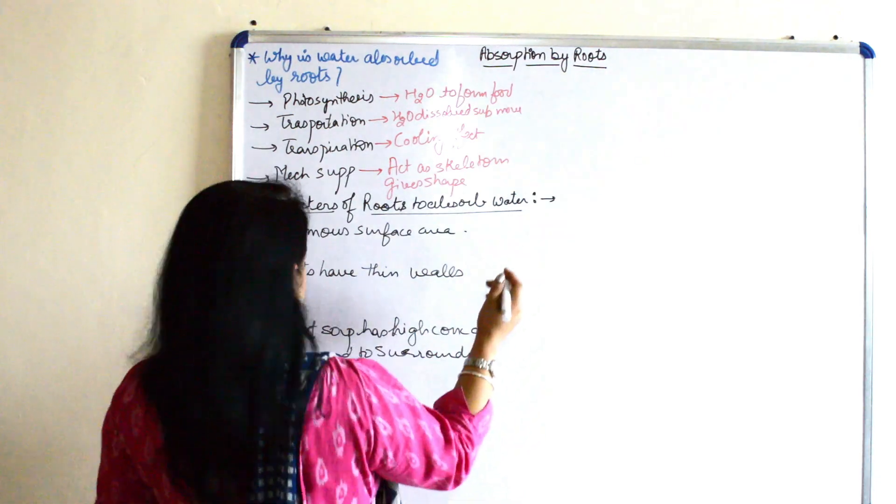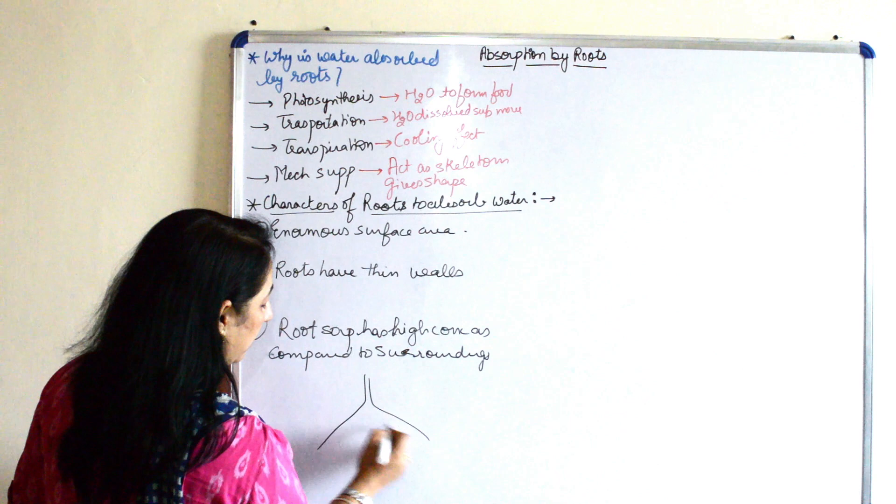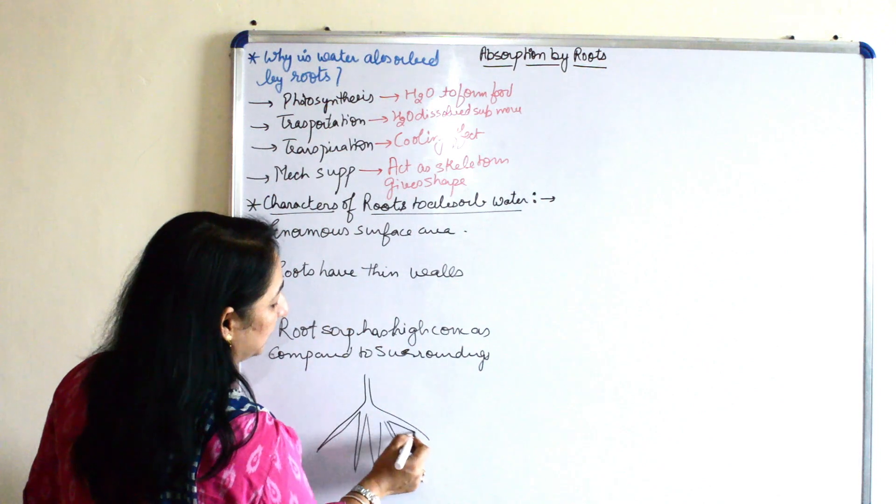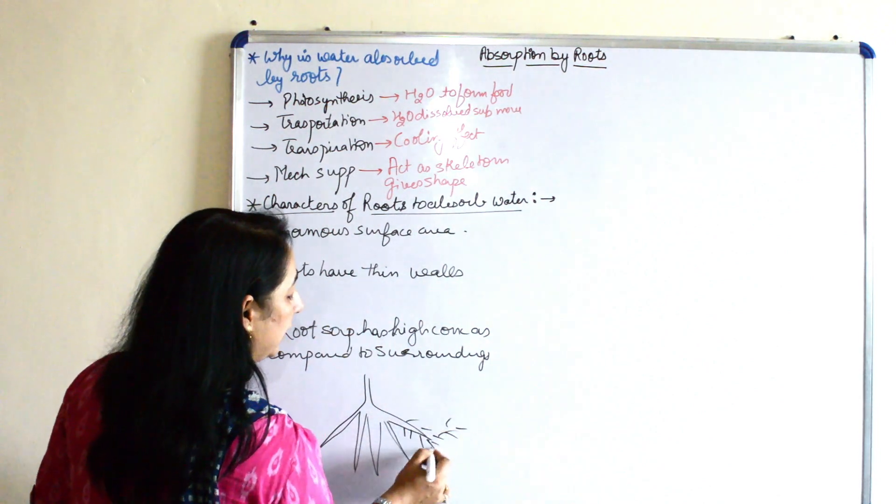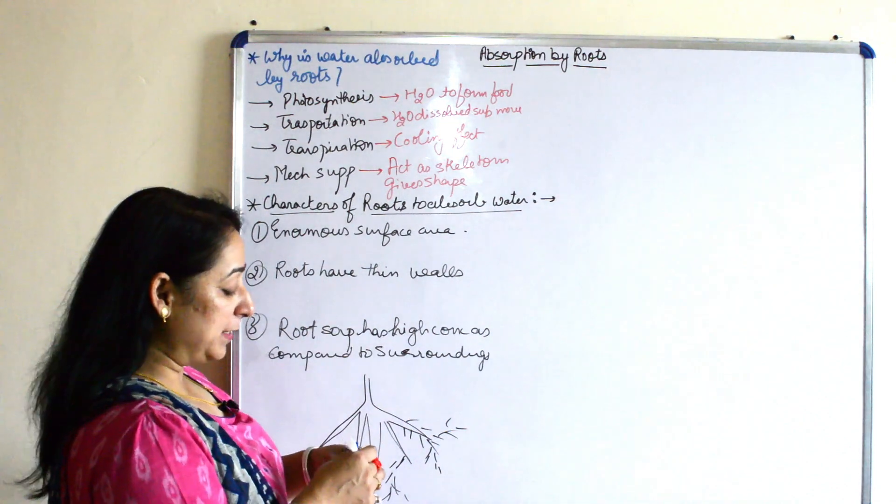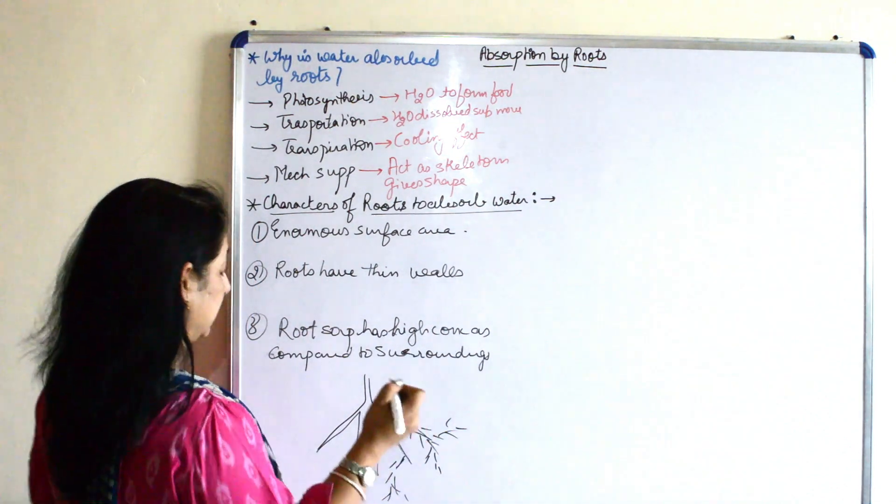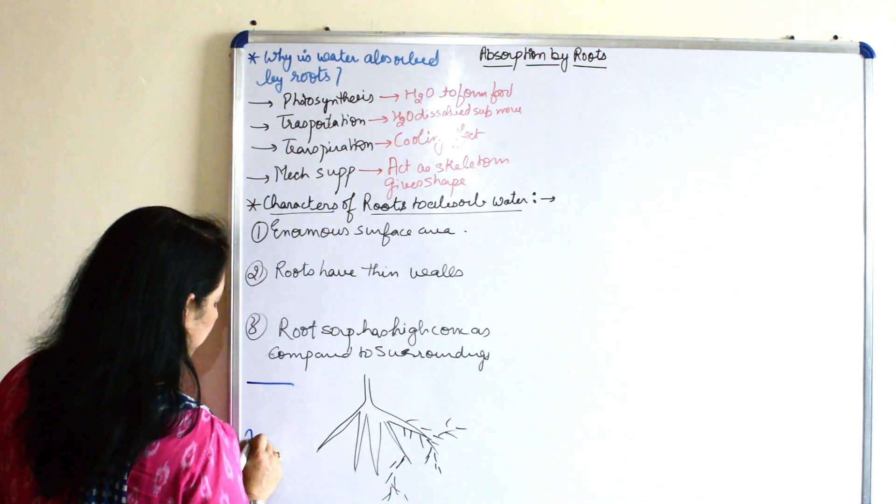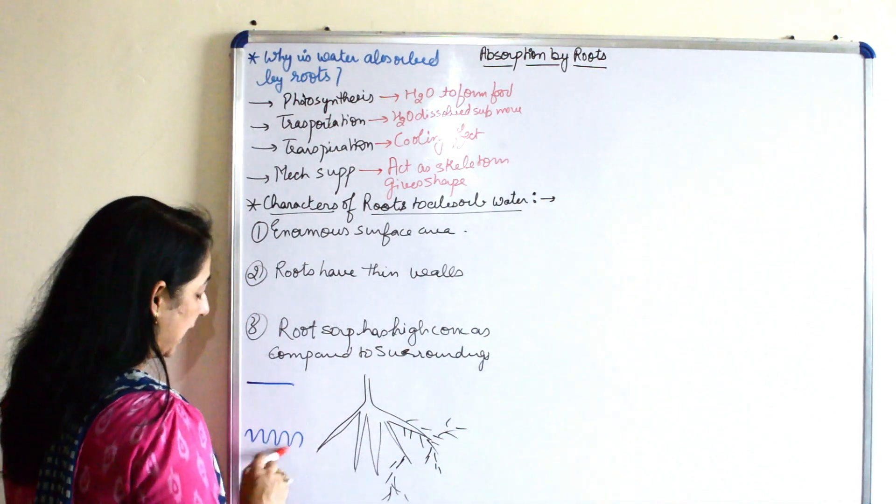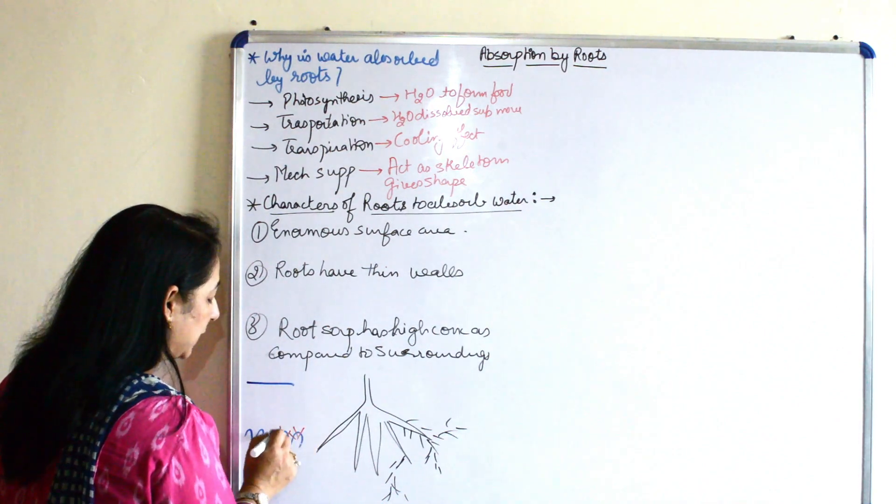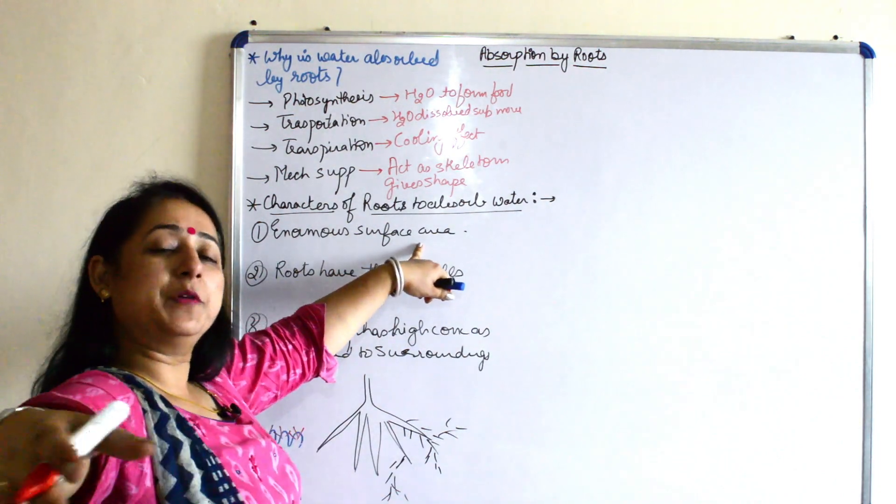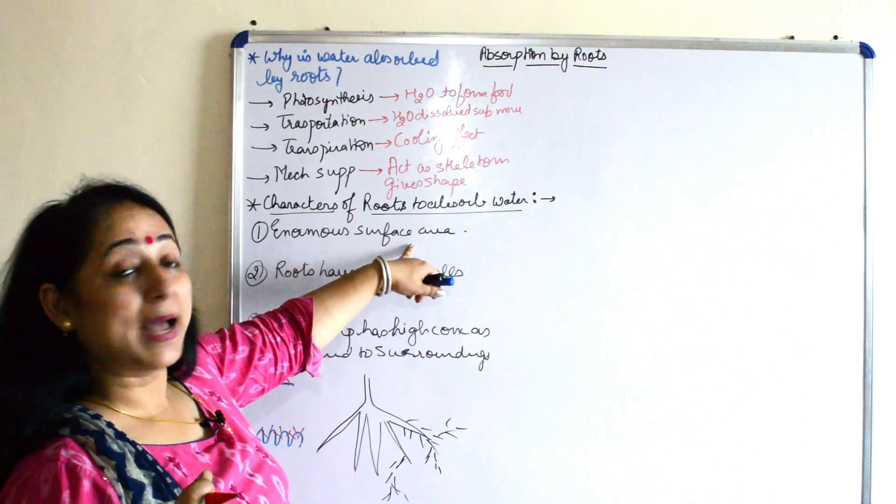These are certain characteristics which makes or enables the roots to absorb more water. Enormous surface area. Roots have root hairs which further divide, which further go. So enormous surface area, as I have been explaining many times, if this is one surface and this is another surface, this has more surface area. So that means if exchange is taking place or movement takes place, it is more here. These roots provide enormous surface area so that wherever you go, you absorb water. This is one characteristic feature.